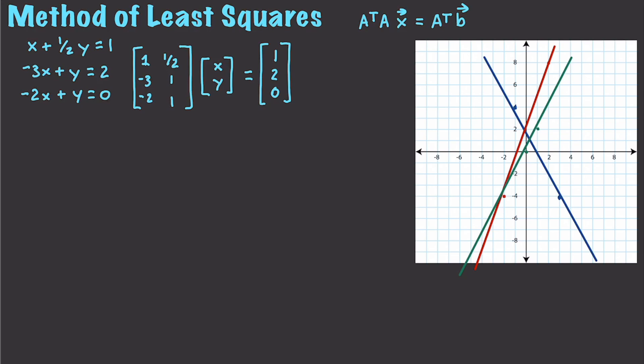Well, the least square solution actually has a formula and that formula is A transform times A times X is going to be equal to A transform B. So we're going to use that to solve this. So to do so, I need to find A transform, which is going to be equal to 1, 1 half, negative 3, 1, negative 2, 1, like that.